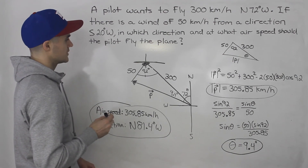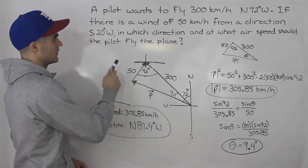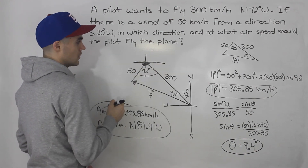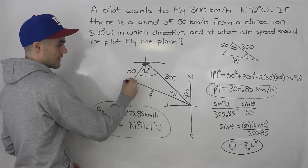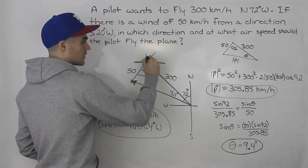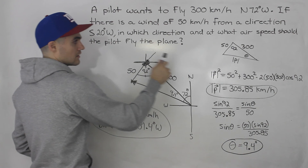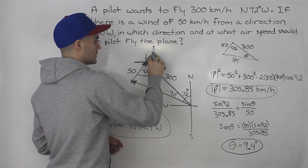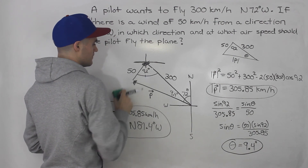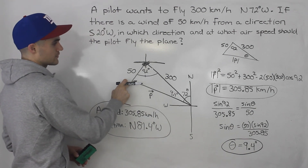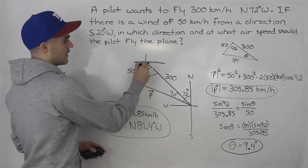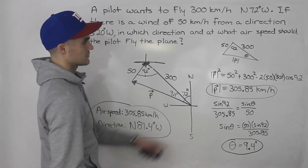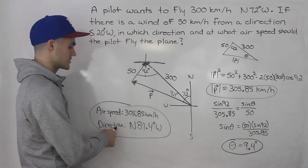Not too bad of a question. The trickiest part was knowing that the wind is coming from the direction of south 20 degrees west, so instead of going south 20 degrees west, you go the opposite way. The wind and the resultant need to meet head to head. Because the wind was coming from that direction, the tail of the vector is there and the head is up there, so they meet at that point. Then combining angles, it becomes a regular triangle — cosine law, sine law — and you get your airspeed and direction.